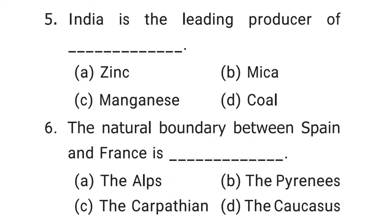The fifth question is: India is the leading producer of — zinc, mica, manganese, or coal? The correct answer is option B, mica.